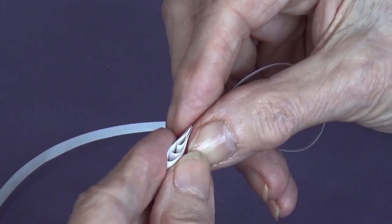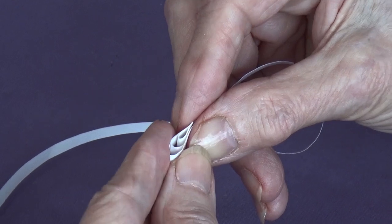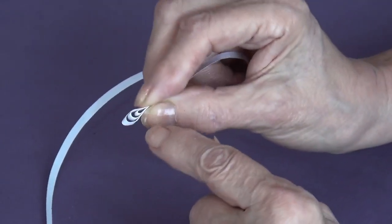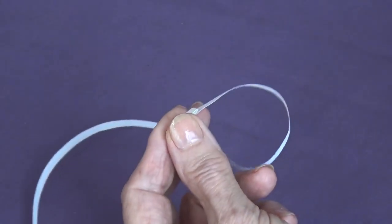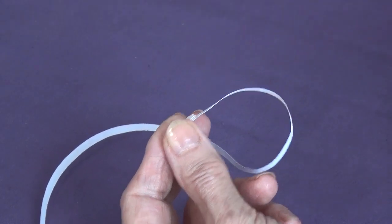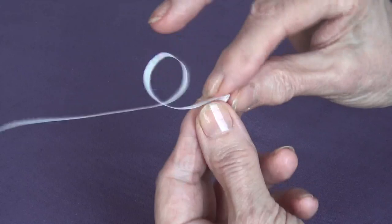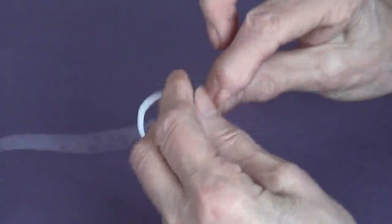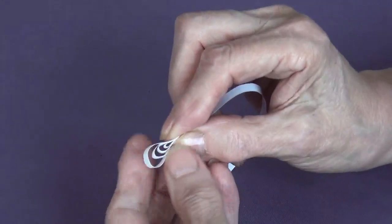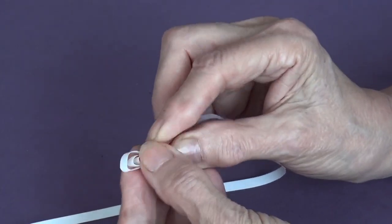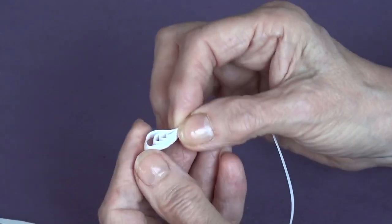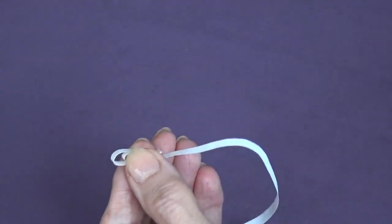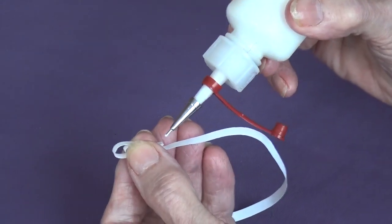A tiny bit of glue again, come round, make the loop bigger. See, I can adjust it with my left hand. If I want this distance to be exactly the same, I can adjust it as I go. So, a little dot of glue again, round I go again.